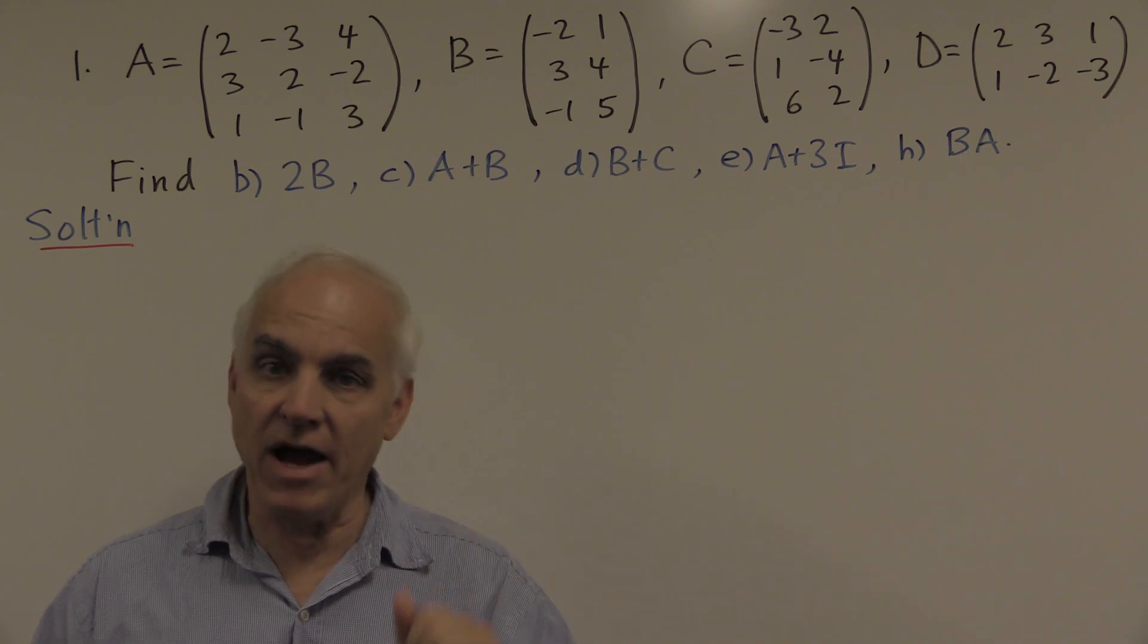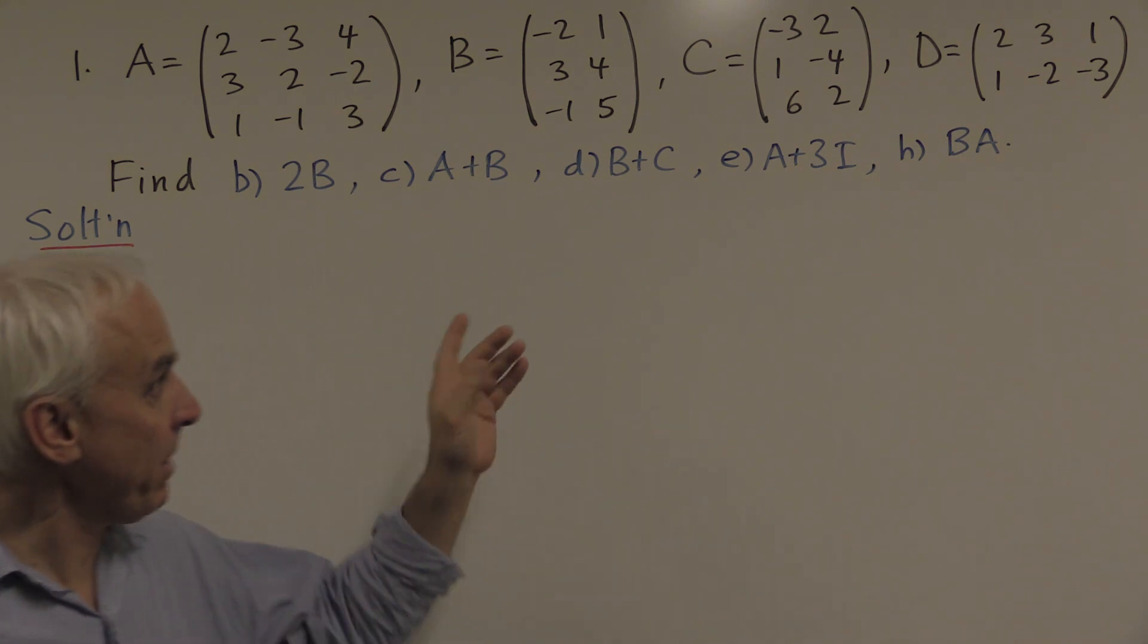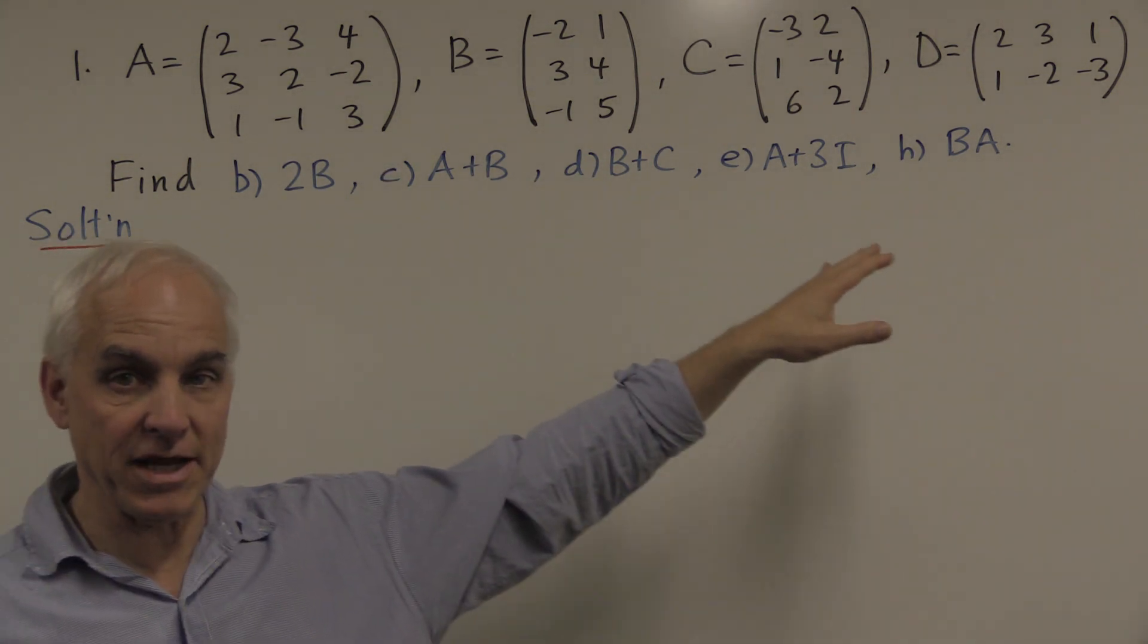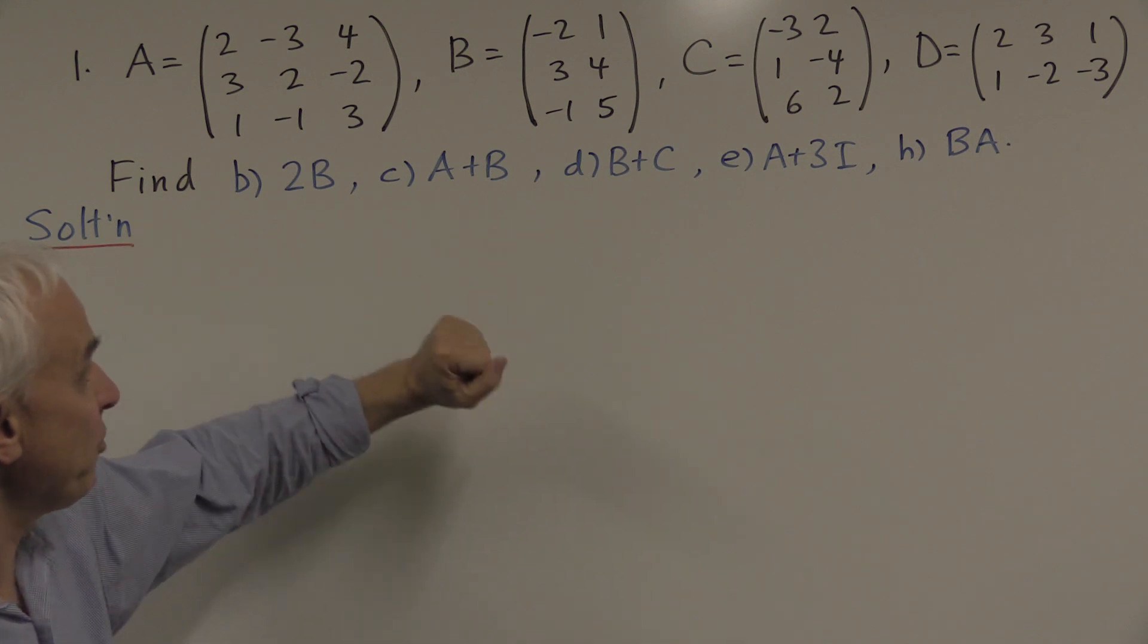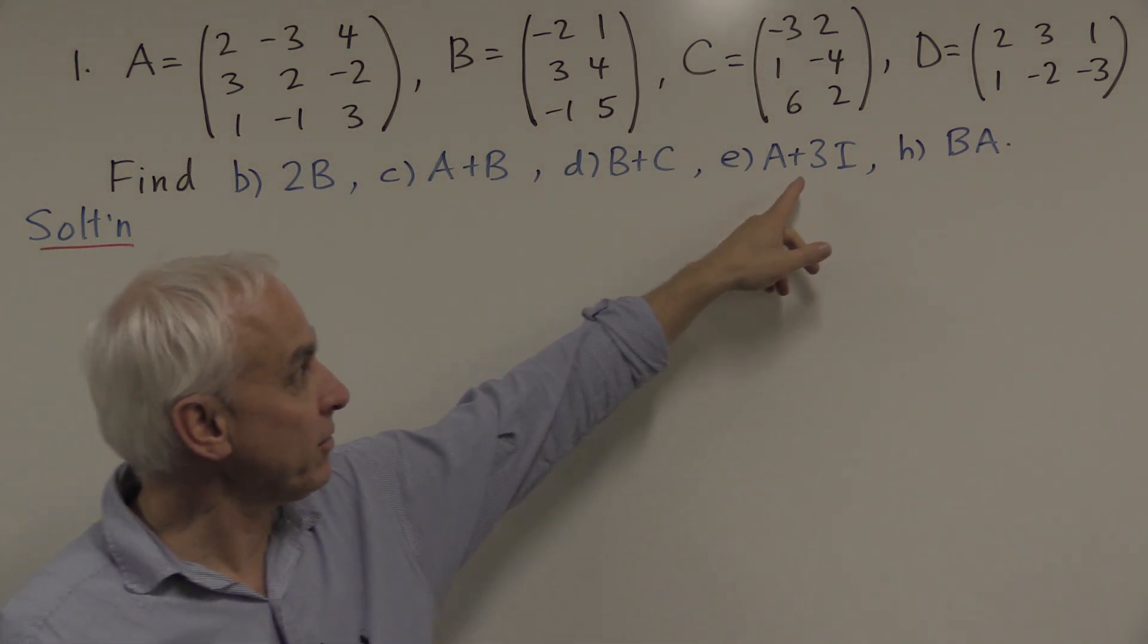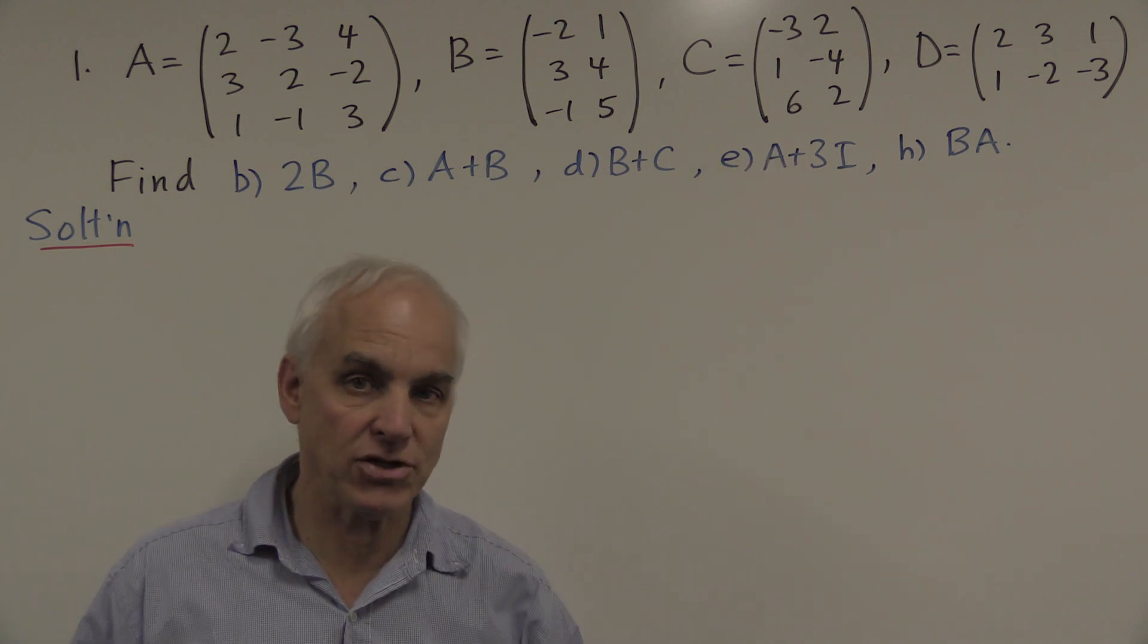We're in Chapter 5 now of our Linear Algebra course and this problem asks us to do some basic arithmetic involving matrices of different sizes. So we have to add a few matrices, multiply some, add three times the identity to A and so on.